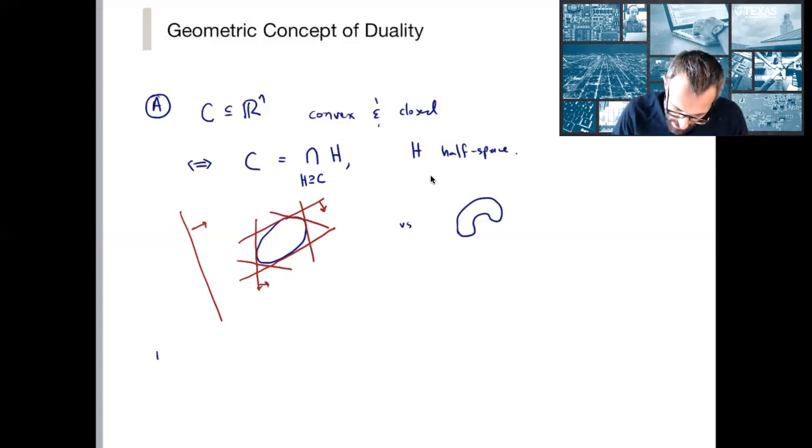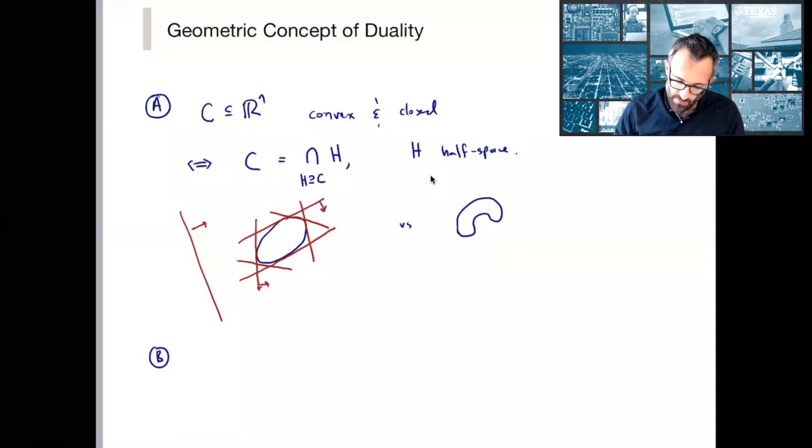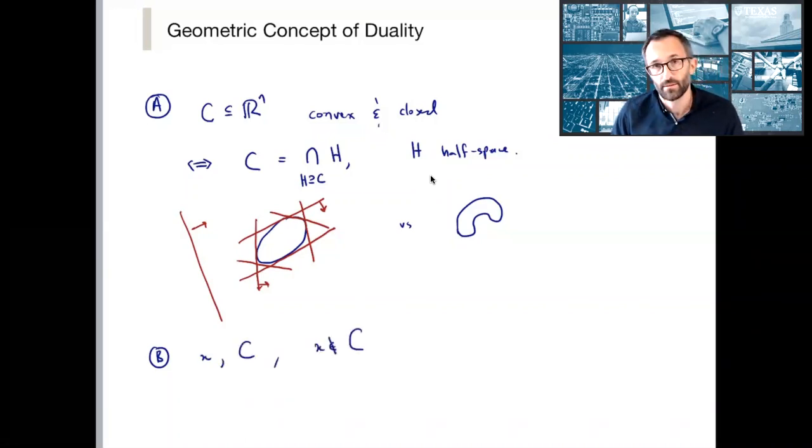And a corollary of this property, a critical corollary, is that if we have a convex set C that's closed, and a point, and that point is not in C, that means that there is a half space that bears witness. There's a hyperplane that bears witness to the fact that x is not an element of C, namely by the fact that x lies on one side of the half space, and C lies on the other side of the half space.